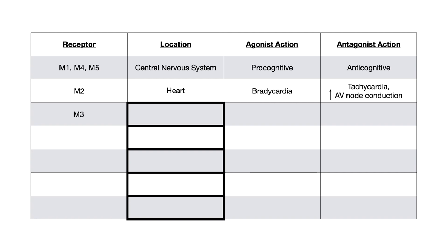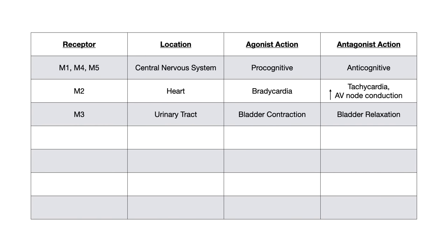The M3 receptor is found in five different locations. In the urinary tract, an M3 agonist causes bladder contraction and urination, while an M3 antagonist causes bladder relaxation and urinary retention. In the GI tract, an M3 agonist causes peristalsis and bowel movements, while an M3 antagonist decreases peristalsis and can cause constipation. This is why anticholinergic drugs cause urinary retention — on a microscopic level you're antagonizing M3 receptors in the urinary tract.